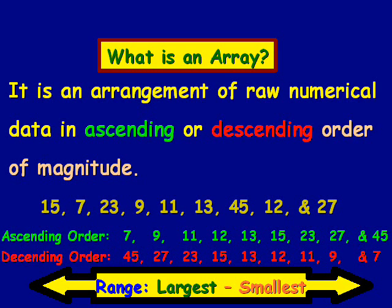So let's look at this data we have in front of us here. Our largest number happens to be 45, so we take 45 and we subtract 7 from it, because 7 is our smallest piece of data, and that gives us a total of 38. So in this case, our set of data has a range of 38.